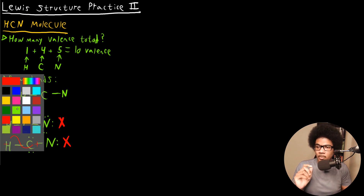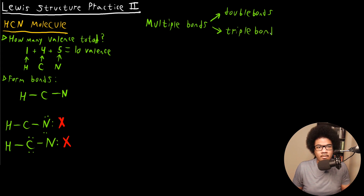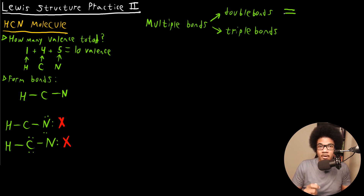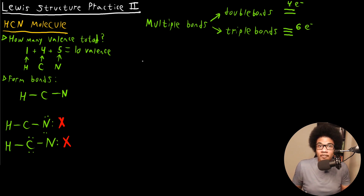This is where the concept of multiple bonding comes into play. Lewis structures can have multiple bonds, which come in two flavors: double bonds and triple bonds. A double bond is denoted by a double dash and represents the sharing of four electrons. A triple bond uses three dashes and denotes six electrons being shared between two atoms. This is another tool you can use to fill all octets and get a correct Lewis structure.